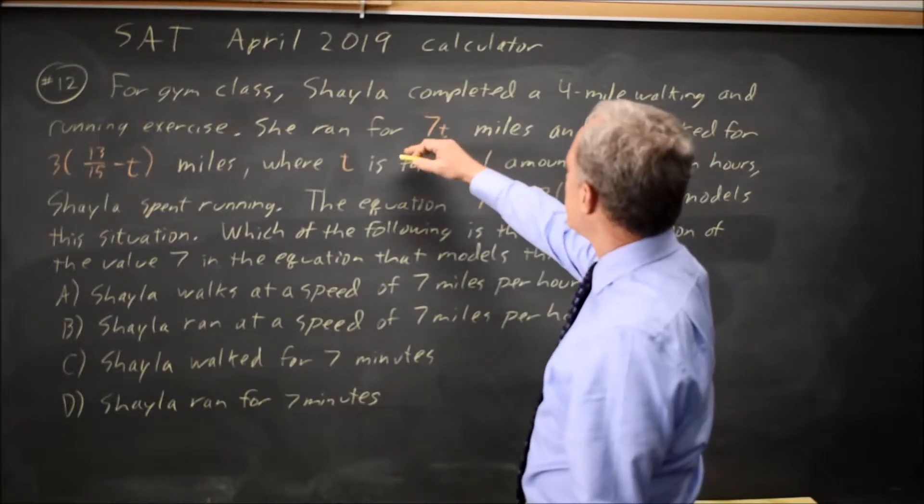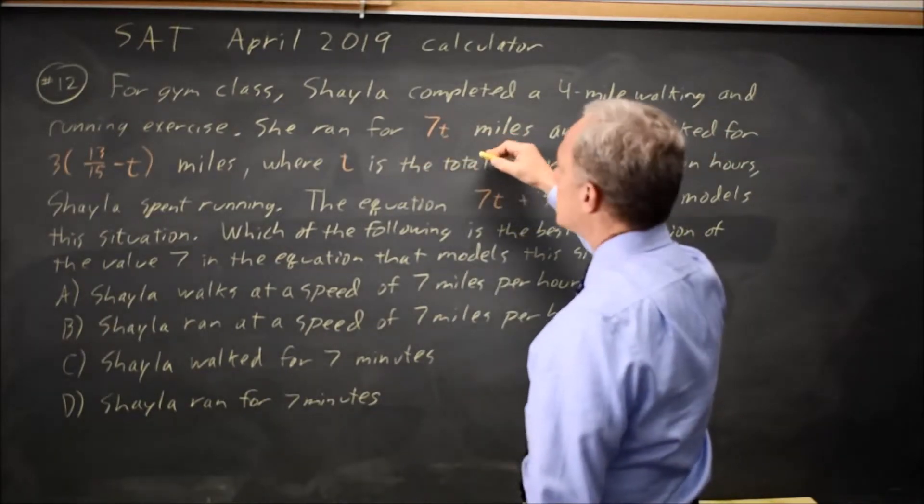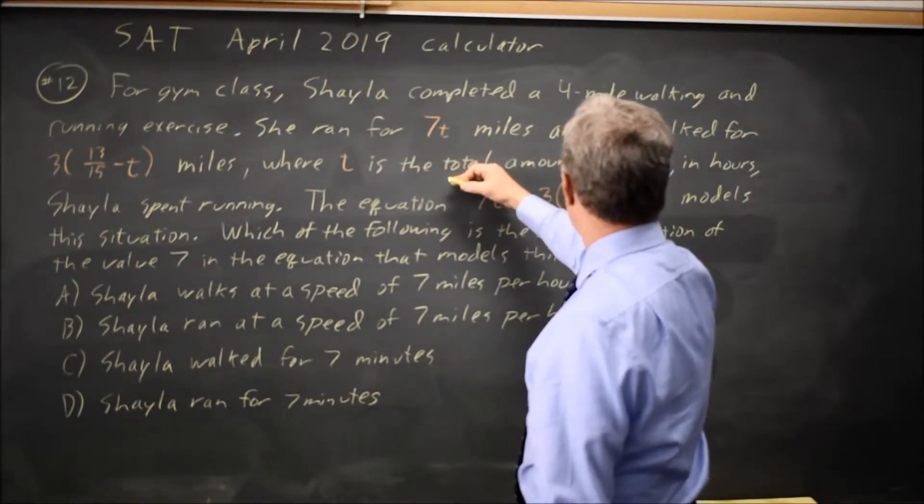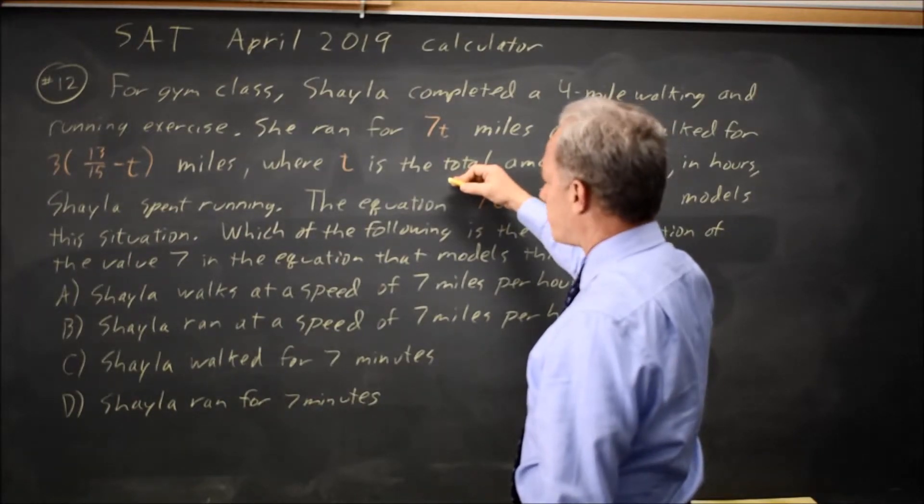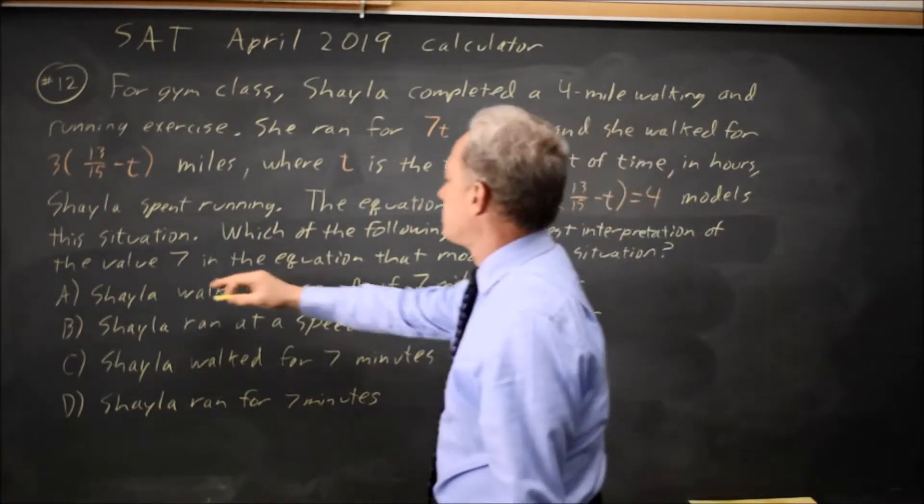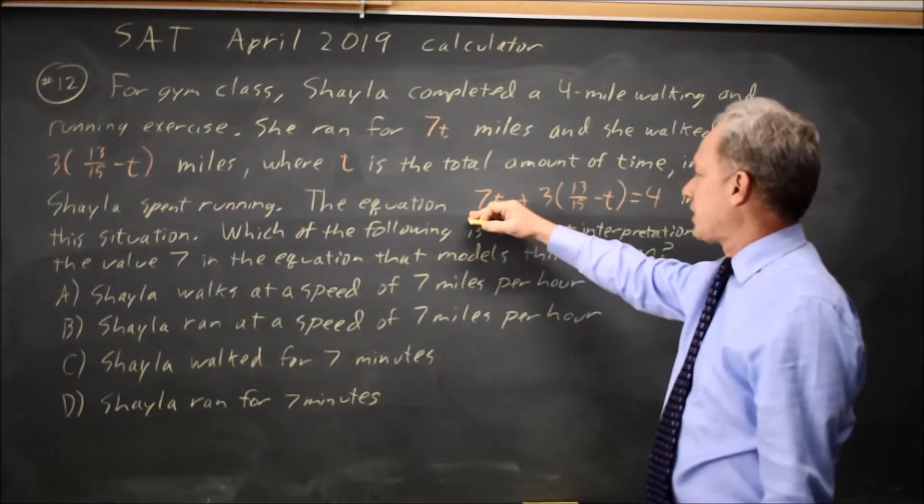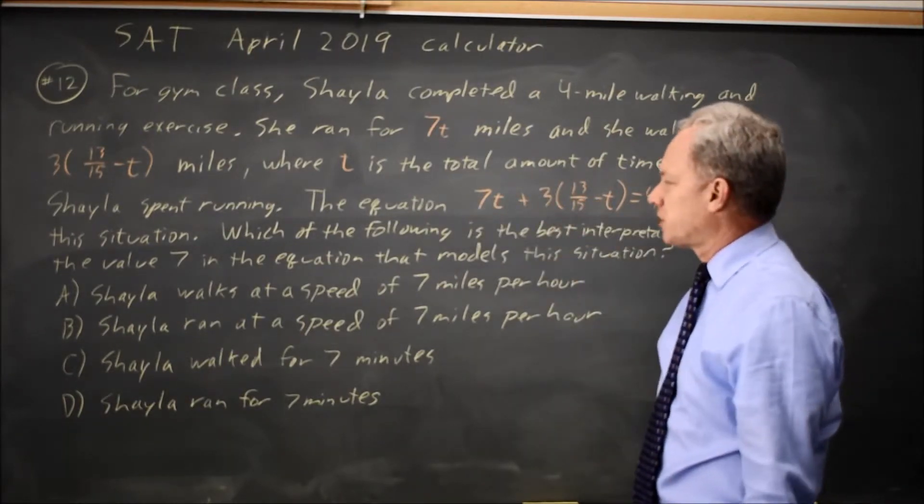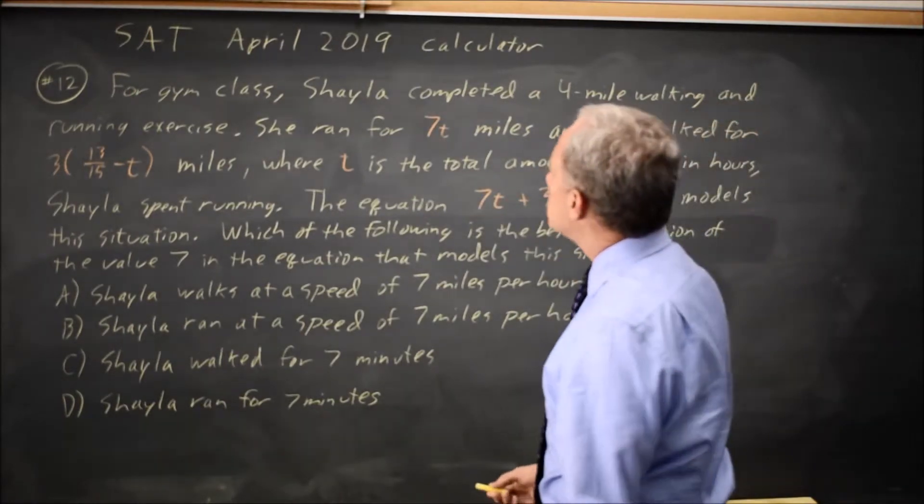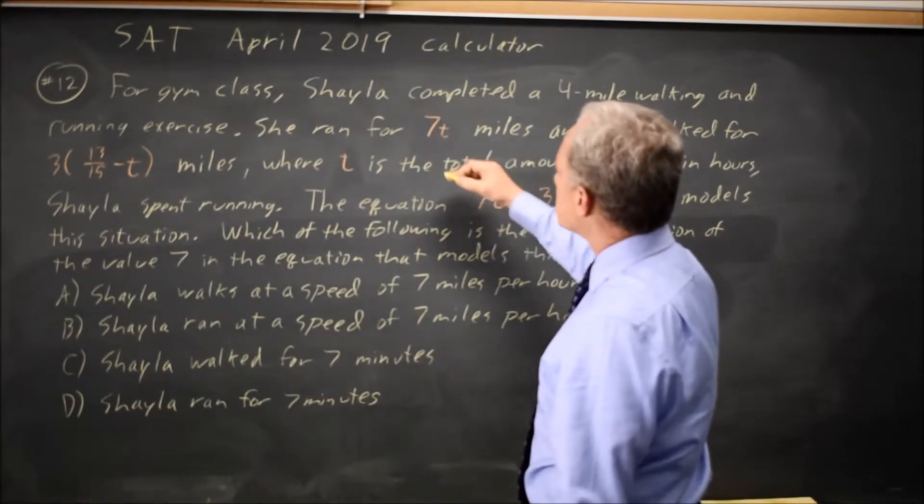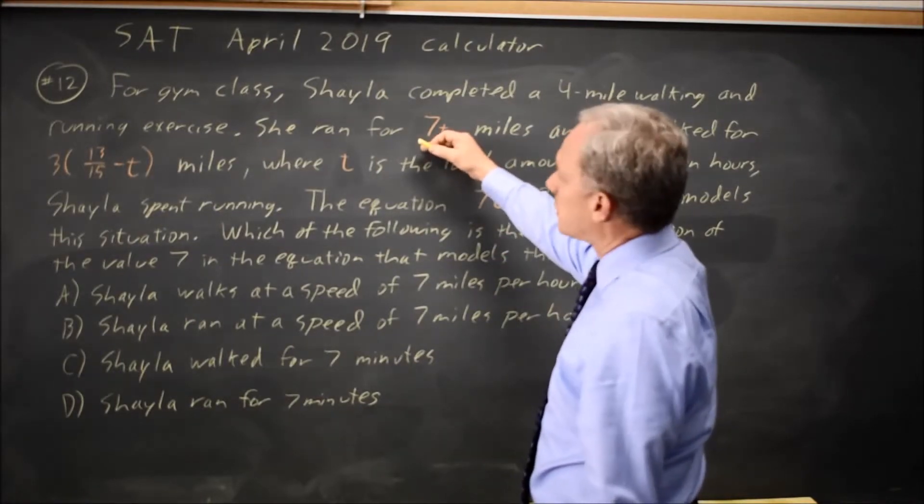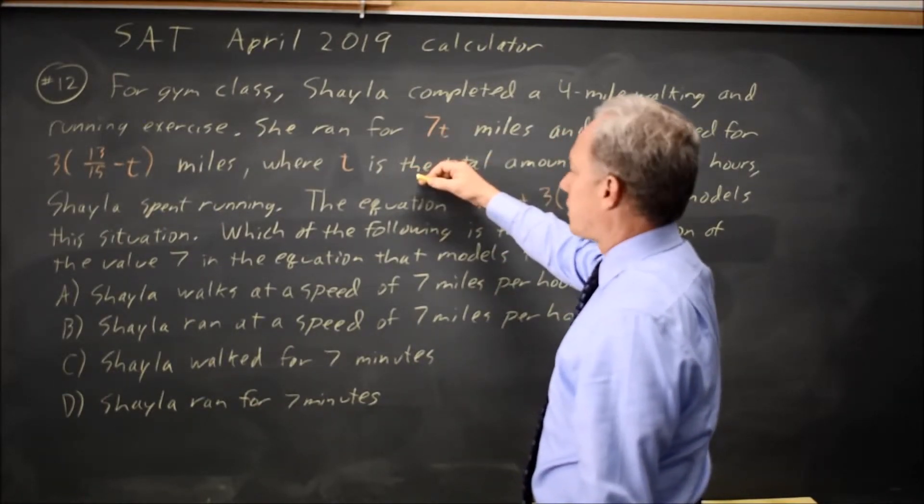They told us Shayla ran for 7t miles, where t is the total amount of time in hours Shayla spent running, and they're asking for the value of 7 in this equation that has 7t plus another expression. So, the 7 refers to her running for 7t miles, where t is the amount of time in hours.